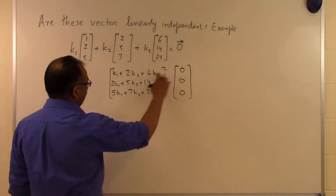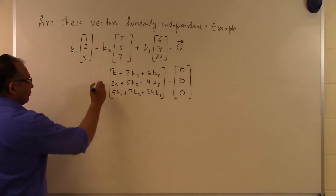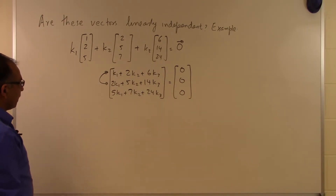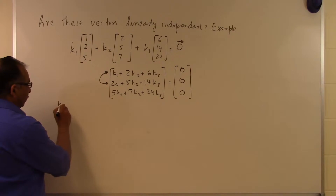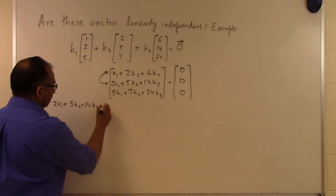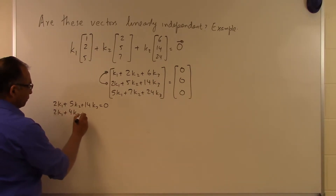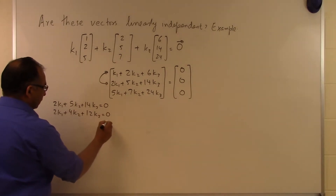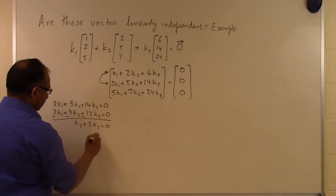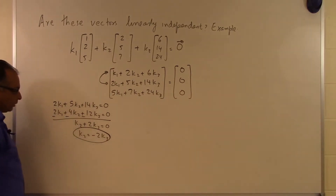Looking at the first two equations to find relationships between K1, K2, and K3: take the second equation, 2K1 + 5K2 + 14K3 = 0, and multiply the first equation by 2 to get 2K1 + 4K2 + 12K3 = 0. Subtracting gives K2 + 2K3 = 0, so K2 = -2K3.